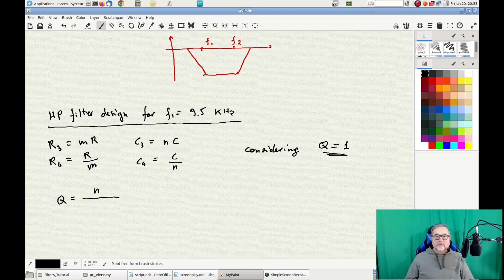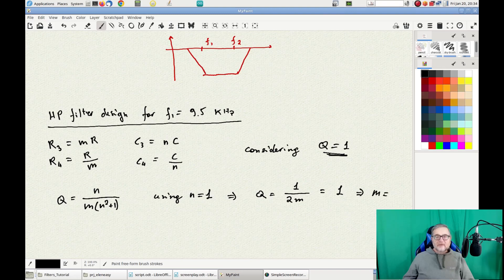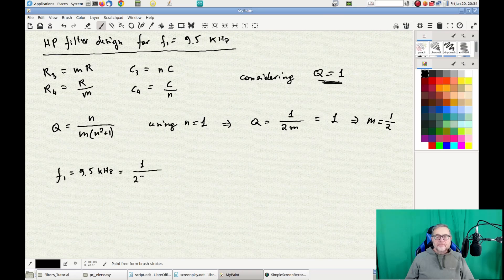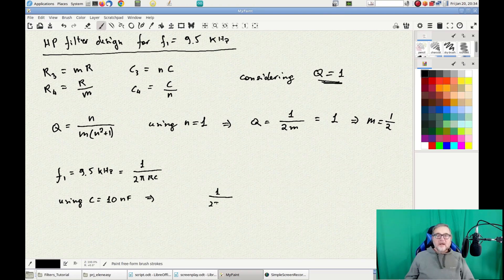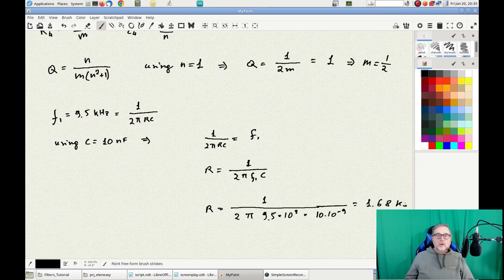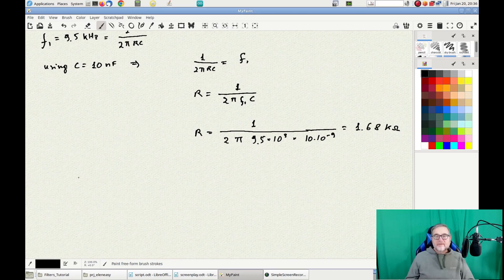From the definition of a Q factor, and using N equals 1, so we can have two identical capacitors, we obtain that M equals 1 half. From the definition of the generalized cutoff frequency, and using a value of 10 nF for the generalized capacitor, we obtain a resistance value of 1.68 kΩ. With these values we can now calculate the actual value of the components of the filter, and adjust them according to standard values.